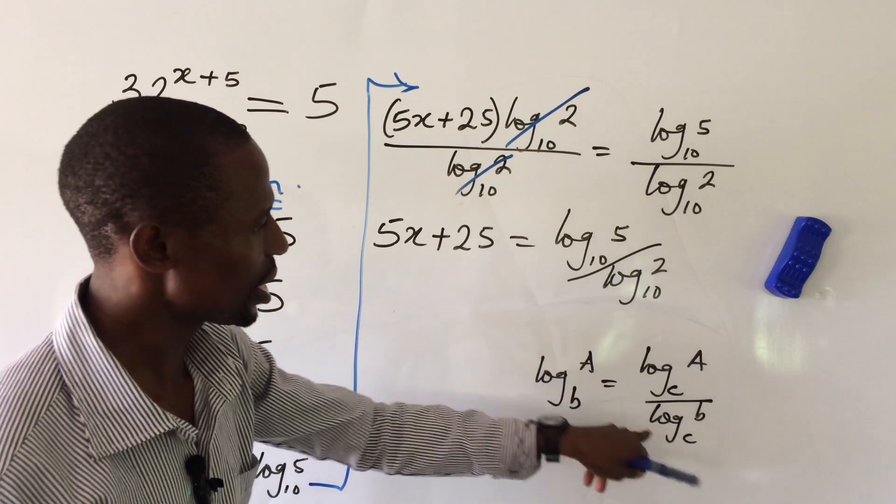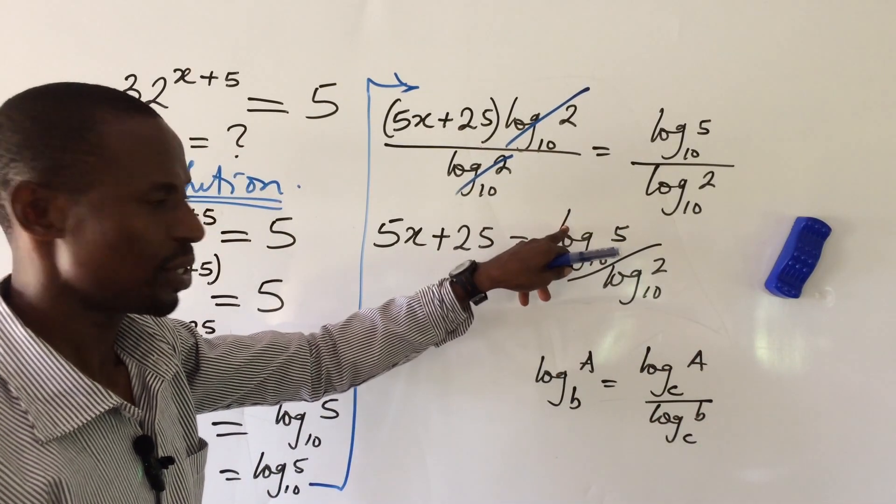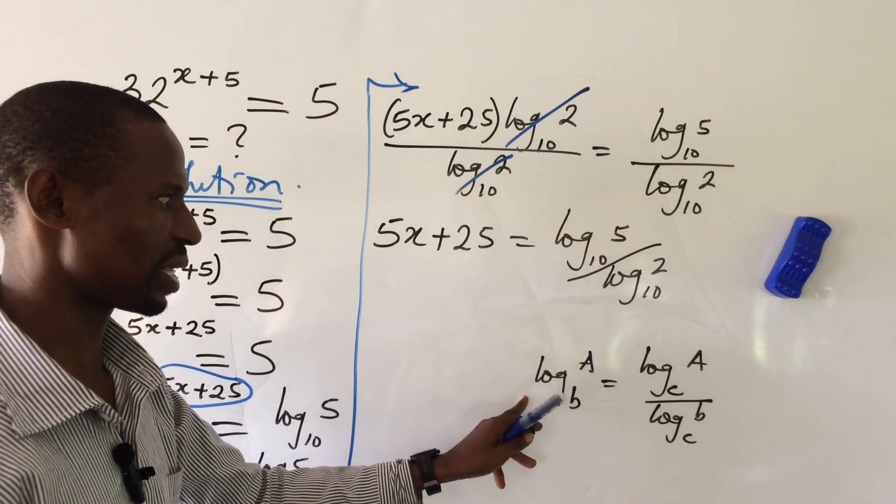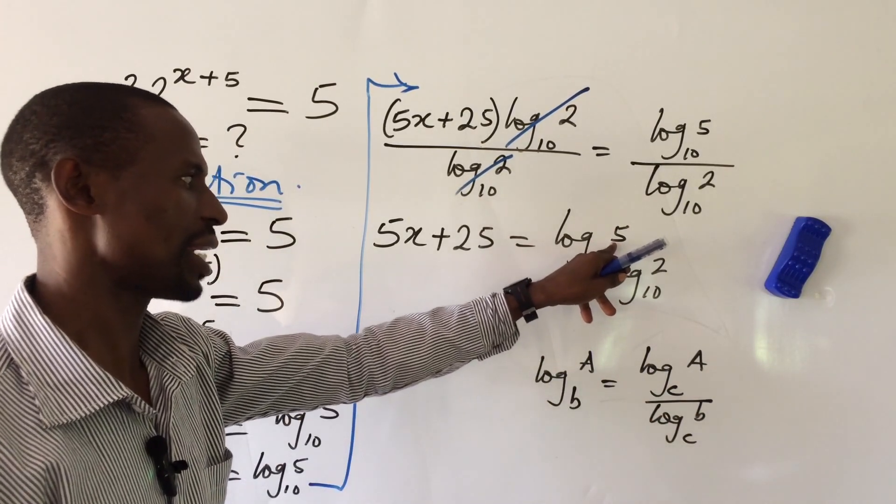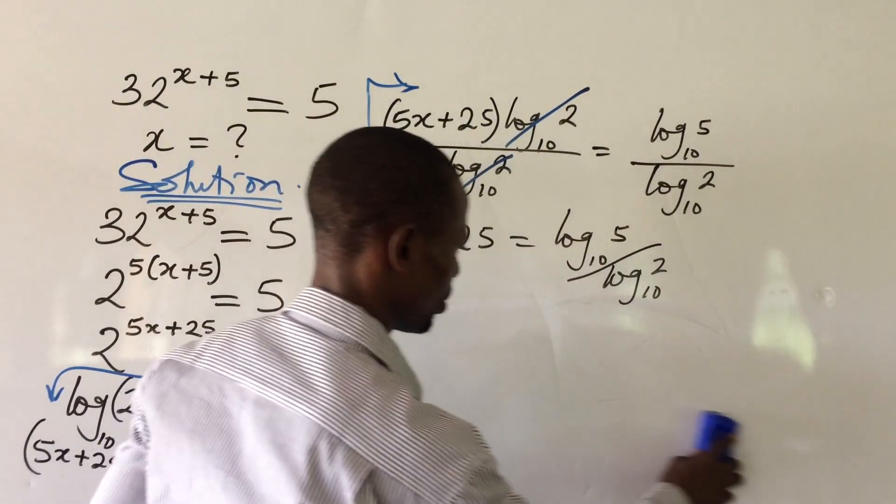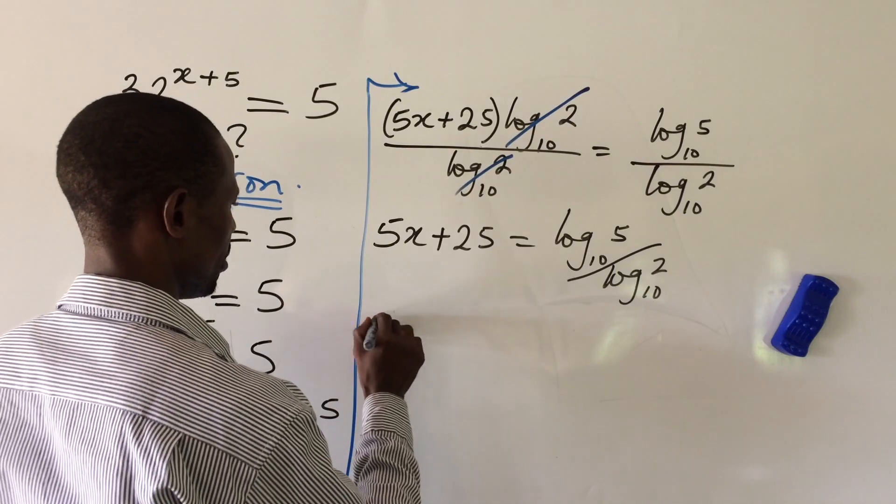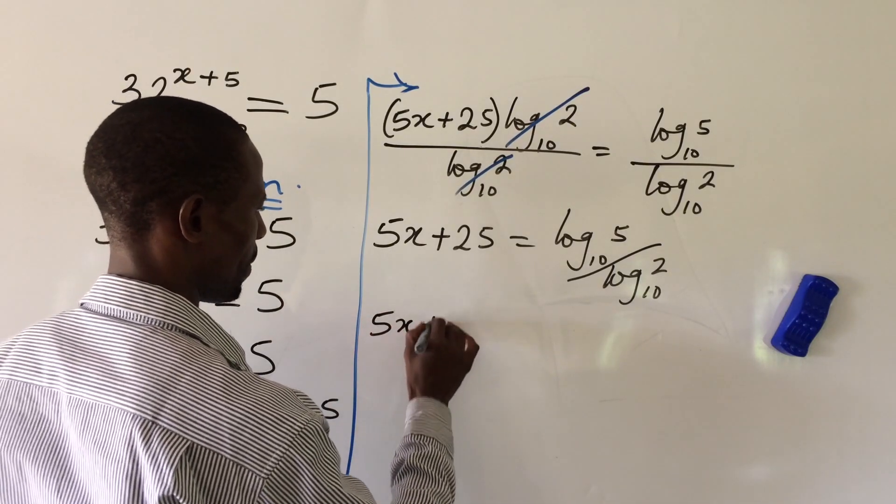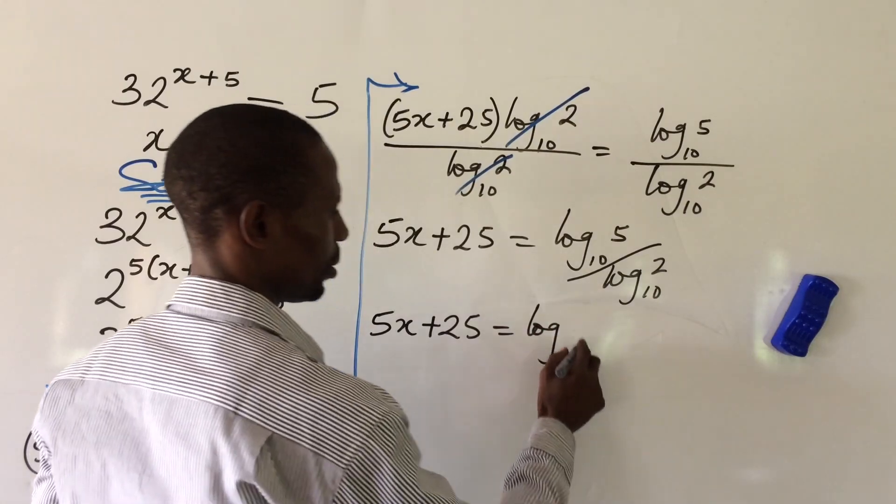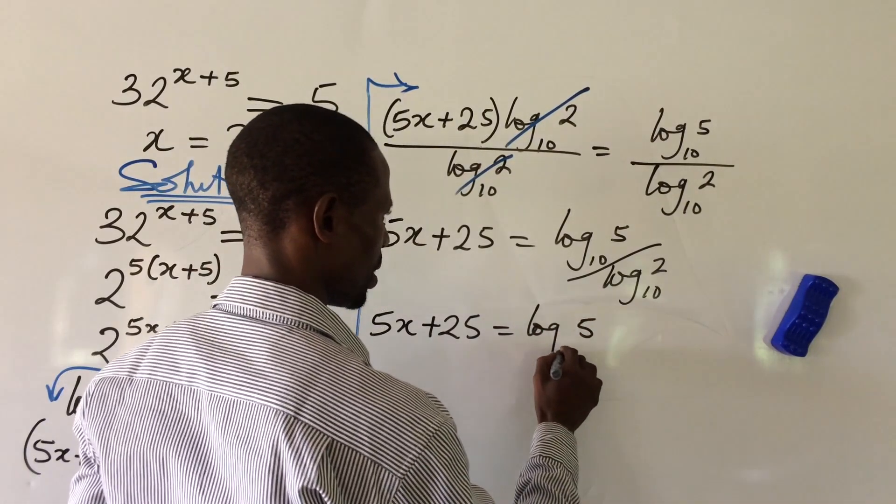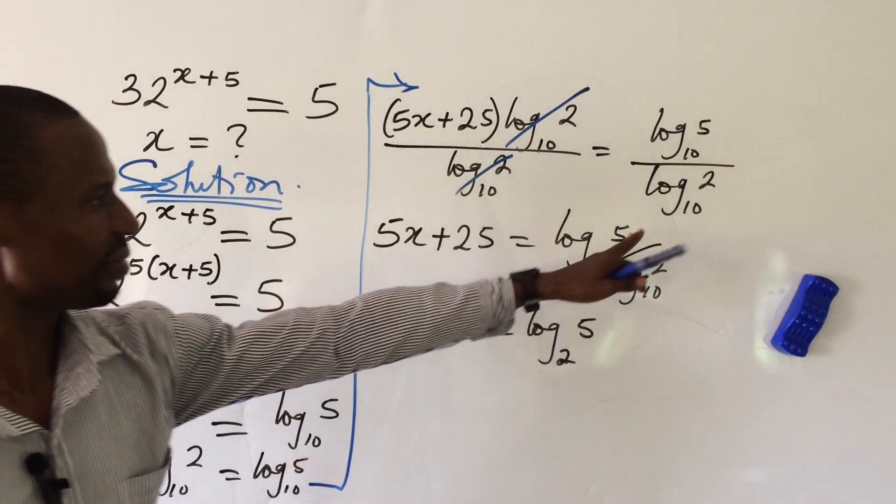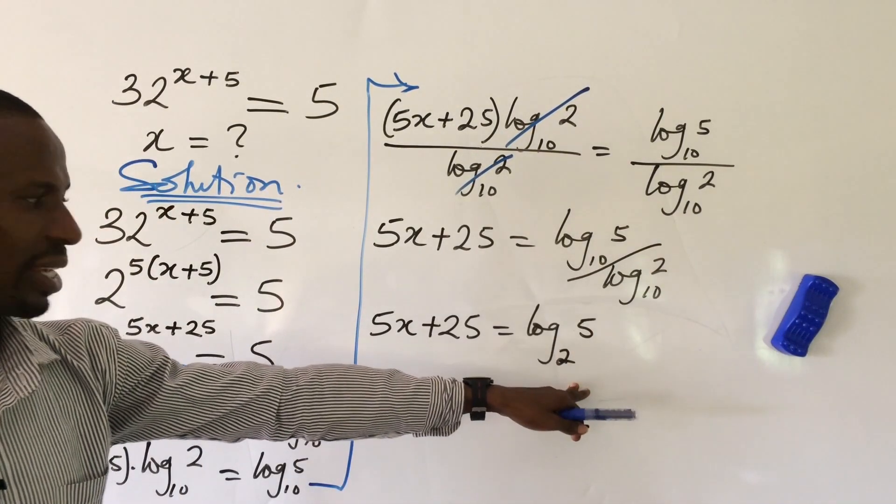So since what we have is similar to this, we can convert it back to this format. So I can rewrite this in another format. So let's go ahead and rewrite this according to this law. This will now give us here, your 5x plus 25 is equal to log your 5 base 2. See, perfect. Okay. So what we have here now is same thing as this.